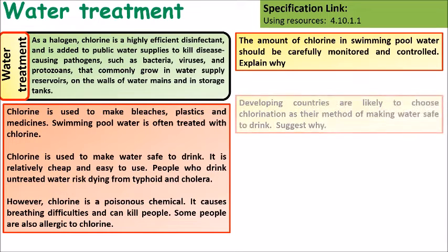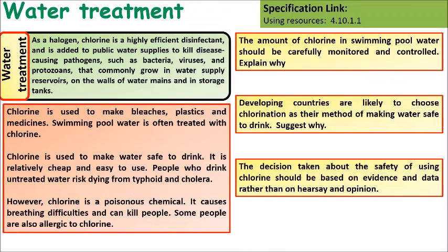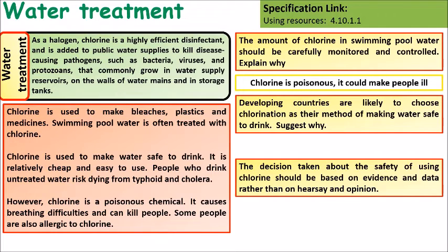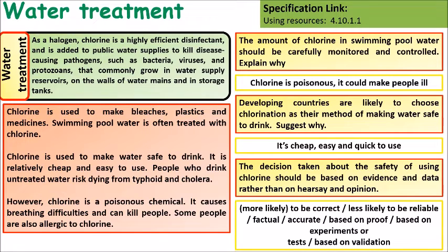Explain why chlorine levels in swimming pools must be monitored. Developing countries are likely to choose chlorination as a method of making their drinking water safe. Decisions about the safety of using chlorine should be based on evidence rather than hearsay and opinion — why? Chlorine is poisonous so it could kill people or make them ill. We use chlorine because it's cheap and easy to use. Evidence is more reliable because it is based on facts and experimental results.